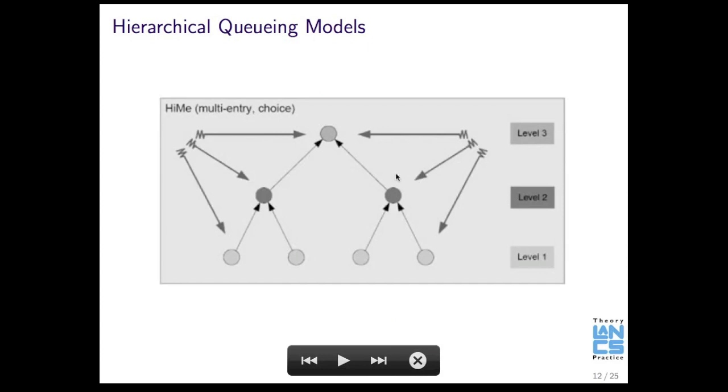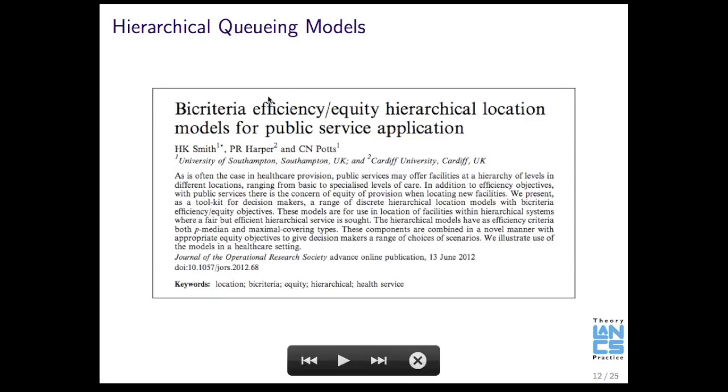Here's just another picture. And what might happen is you have a multi-entry system with choice where people could choose to enter the system at various levels of the hierarchy. Now, the reason I'm putting up this slide is because the person I'm visiting to give this talk to, Honoris Smith, is actually the first author on this paper. Professor Harper now is at Cardiff University. I do a lot of work with him as well. So, this is some work they've done looking at hierarchical location models. And so, I'm looking at this as well.